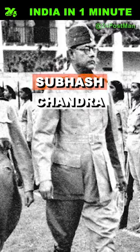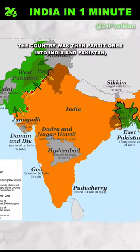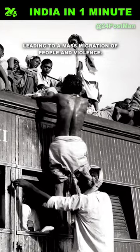In 1947, India gained independence from British colonial rule, following a long and difficult struggle led by freedom fighters like Subhash Chandra Bose and Gandhi. The country was then partitioned into India and Pakistan, leading to a mass migration of people and violence.